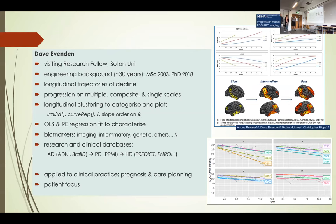In terms of next steps, it would be great to try and associate these rates with various biomarkers — inflammatory, imaging, genetic and others. We're looking at different databases, not just Alzheimer's but also Parkinson's. I should point out this work is more applied to clinical practice, prognosis, and care planning — very much patient-facing research, rather than early disease pathology.